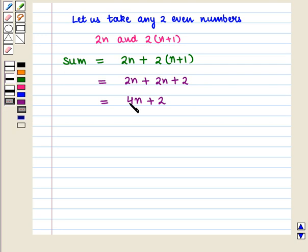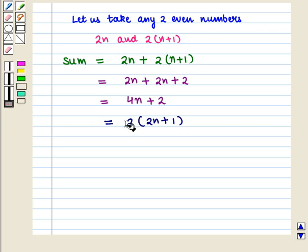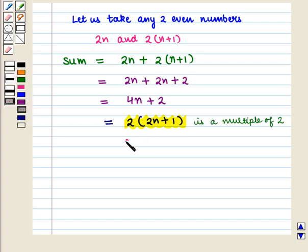Now taking 2 common from both these terms, we get 2(2n+1). See, the sum 2(2n+1) is again a multiple of 2. So, it is also an even number.